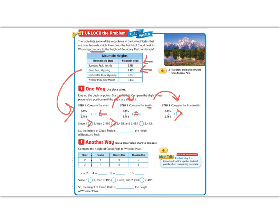And 2.488 is less than 2.495. So we know the height of Cloud Peak is higher than the peak of Boundary Peak.